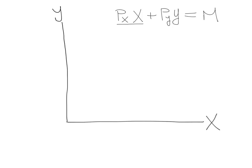So PX times X is the amount of money the consumer spends on X, PY times Y is the amount of money the consumer spends on Y, and when you add those two things we're going to assume the consumer has to consume all his or her income.